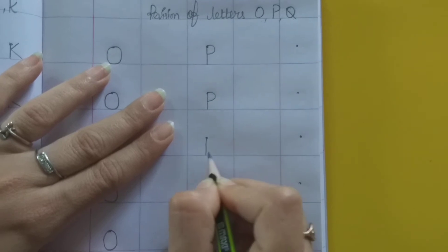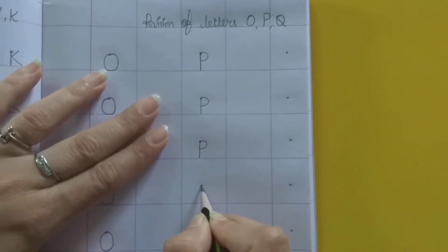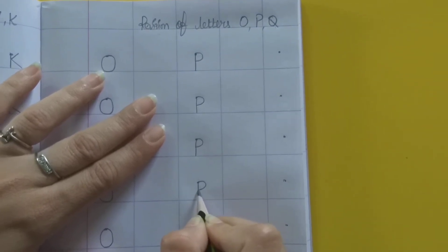P for parrot. P for pencil. Standing line. Make a curve and close the curve.